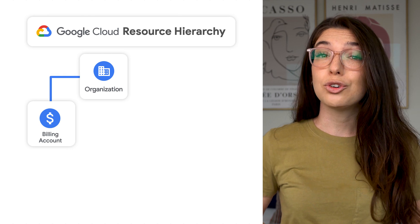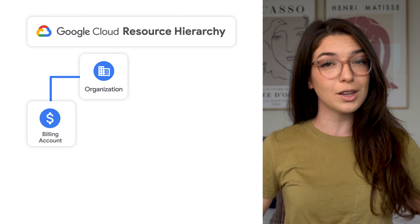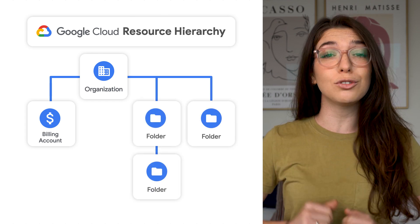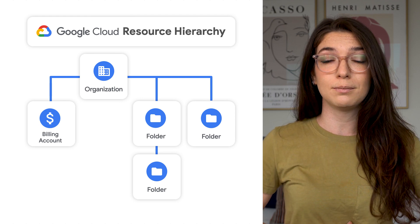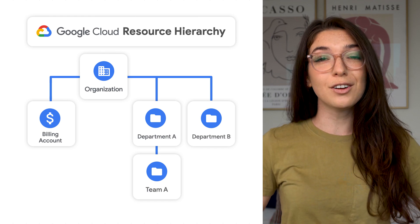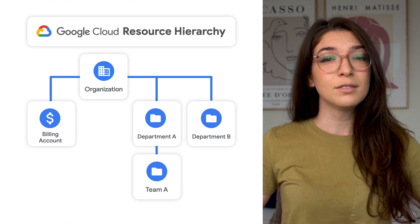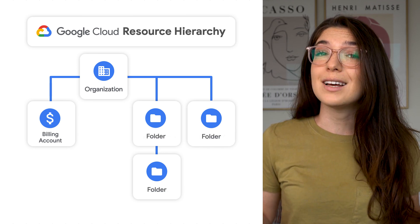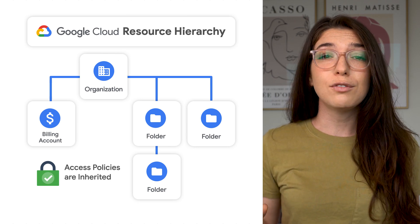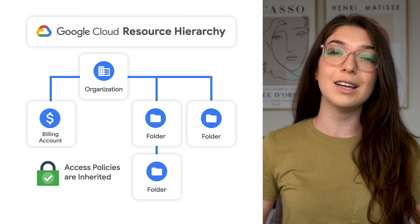Within an organization, you create billing accounts that specify who actually pays for Google Cloud resources. You can also create folders, which offer an additional grouping mechanism for resources. Folders often represent business units or legal entities within your company and make it easier to organize and monitor resource utilization. Folders also act as a policy inheritance point — access rules granted on a folder are automatically inherited by all projects and folders included in that folder.